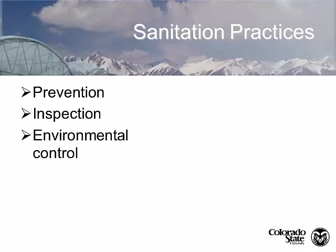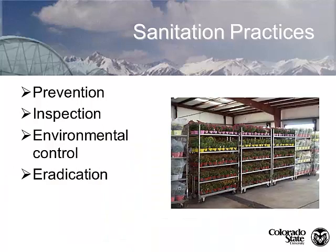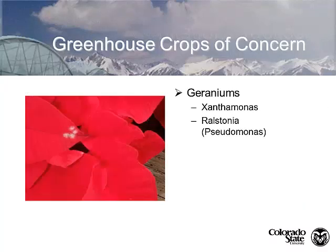The primary things we need to think about in sanitation practices include prevention of disease problems, keeping the greenhouse clean, inspecting materials that come in, maintaining a good environment, or eradicating the problem. We're looking at several different crops that have specific concerns — diseases that we can only avoid through eradication.